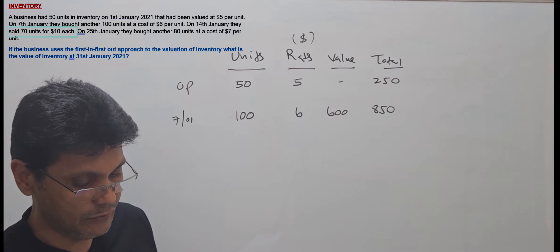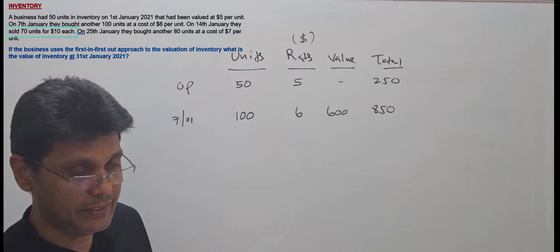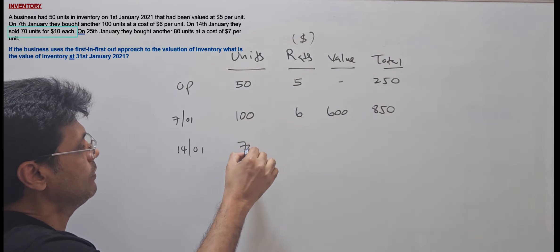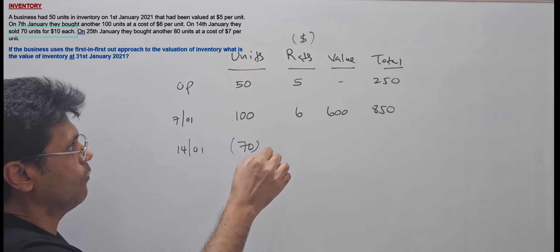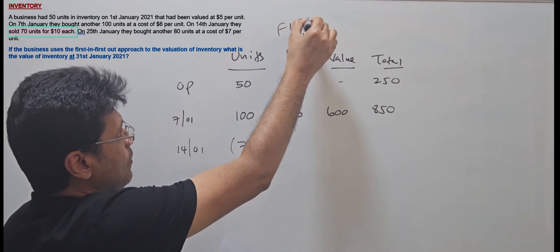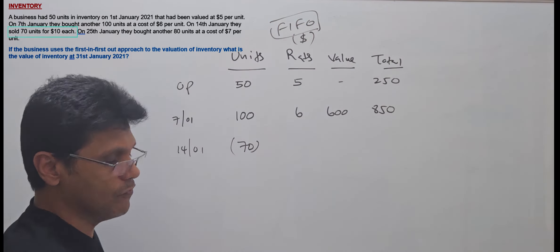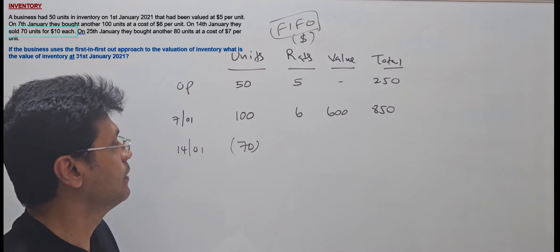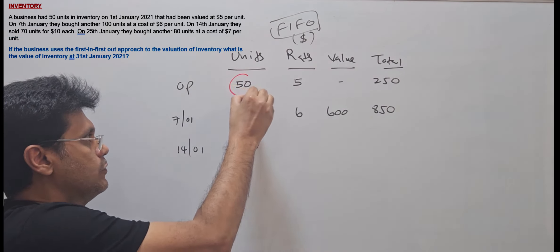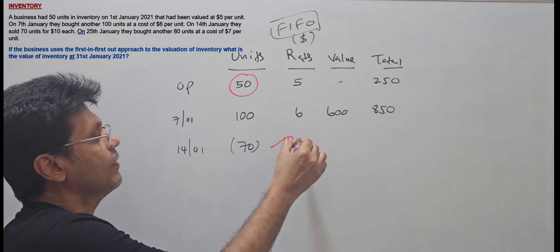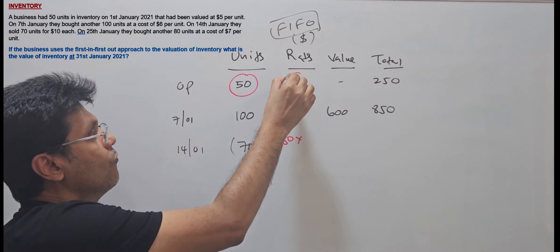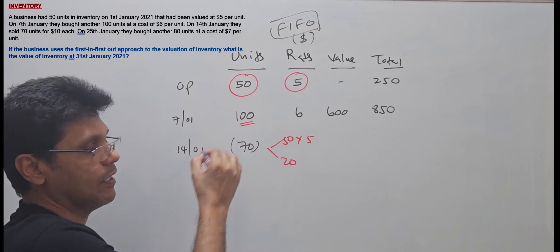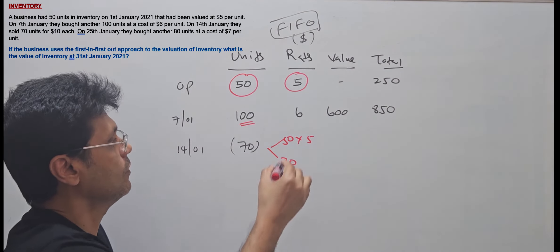On 14th January, they sold 70 units. Using the first-in-first-out method, the 50 opening units will be used first at the rate of $5. The remaining 20 units will be taken from the 100 units purchased on 7th January at the rate of $6.